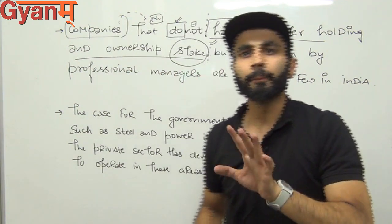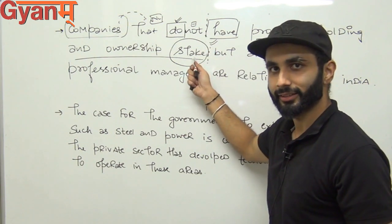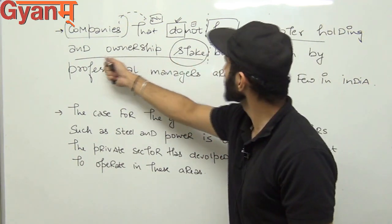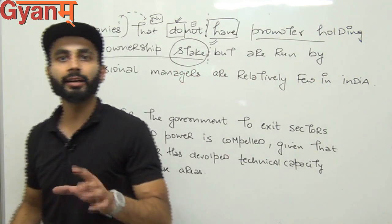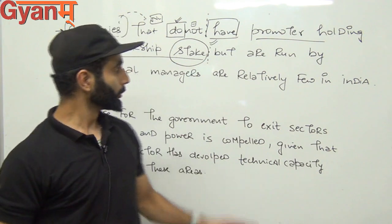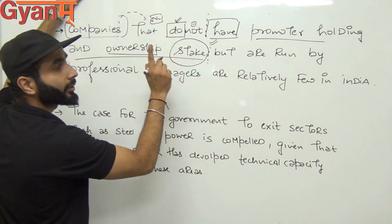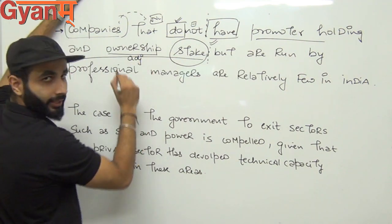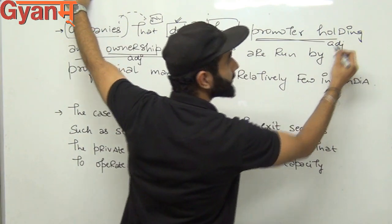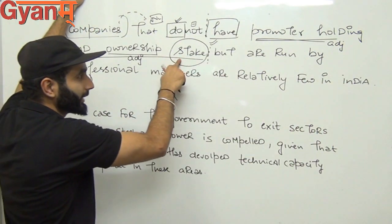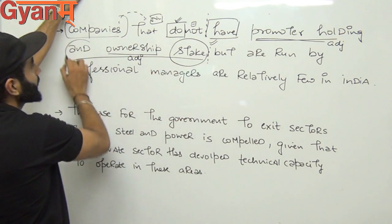Simple: companies that do not have — go to just the last word 'stake'. Everything in between — 'promoter holding and ownership' — that is simply an adjective clause creating confusion. It's describing what kind of stake: ownership stake, promoter holding stake. These are adjectives of 'stake'. Now 'and' — its work as a conjunction is to join. So what was joined? Ownership stake and promoter holding stake — both are correct individually.